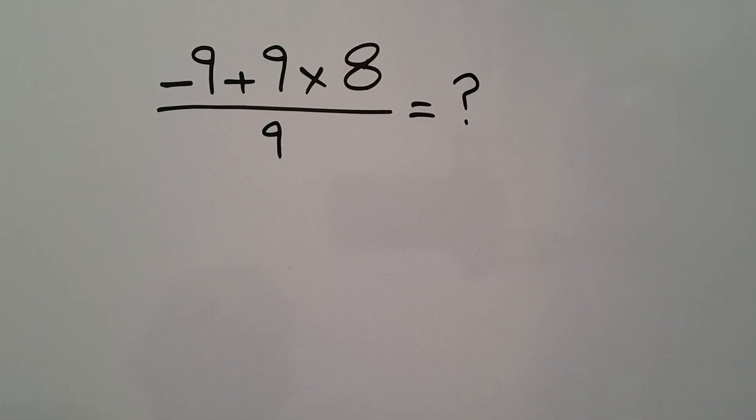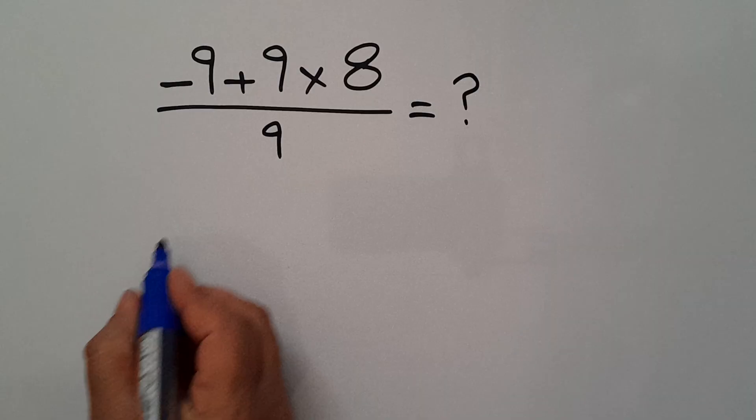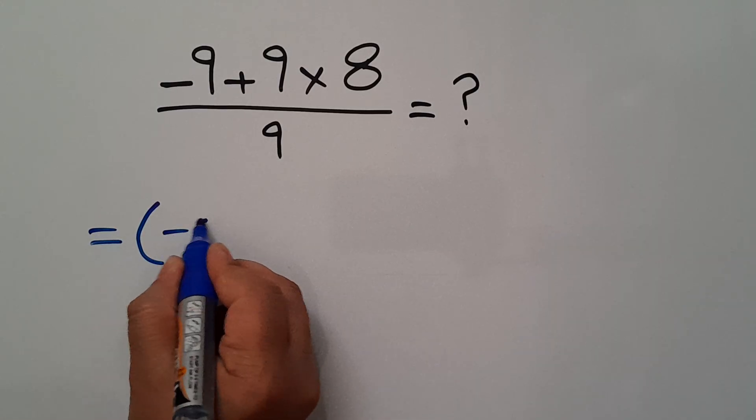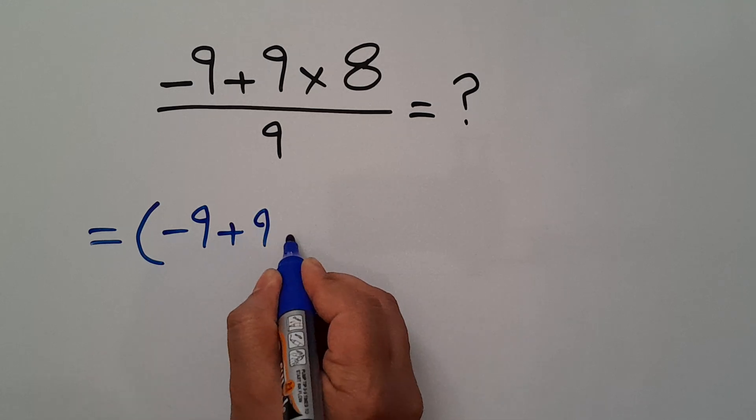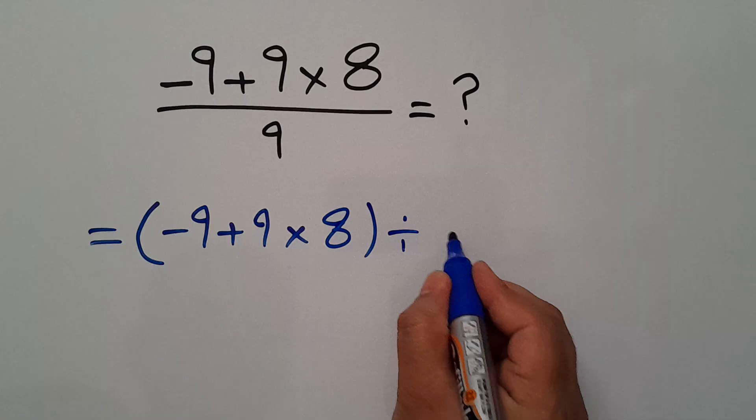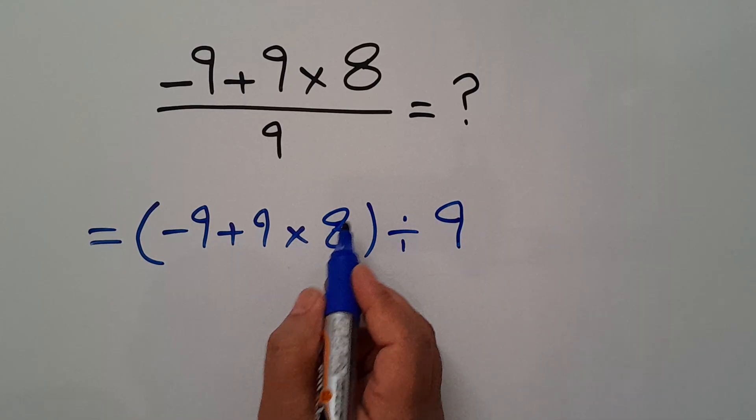Our fraction actually equals parentheses negative 9 plus 9 times 8, all divided by 9. The numerator divided by the denominator. Here we have parentheses and division, according to the order of operations.